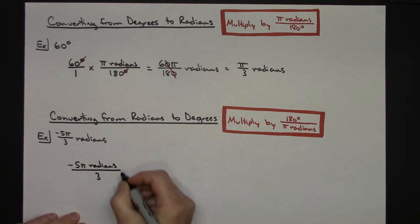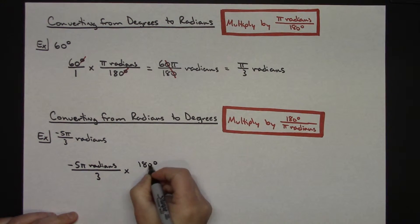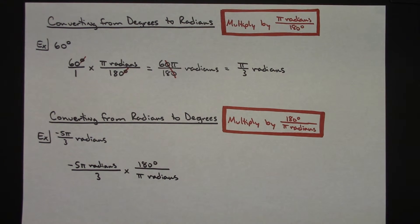This way when I multiply then by the 180 degrees over π radians, I can clearly see that I've got radians in the top and radians in the bottom. Which now I can cross off labels, which is going to leave me the only label left there is going to be degrees. So I am definitely converting to degrees.